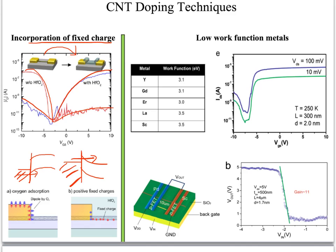The second approach is to use low work function metals. The metal has a very low work function that aligns right into the conduction band of the carbon nanotubes, so no further adjustments are needed. The problem is that these metals are quite reactive and tend to oxidize in air, so we need a passivation layer to prevent oxidation. One example uses palladium and scandium to make an inverter.